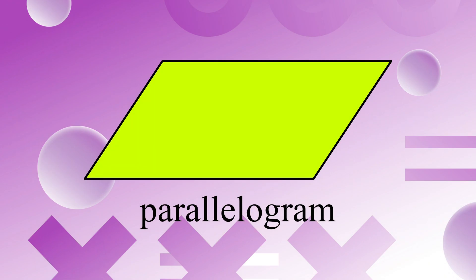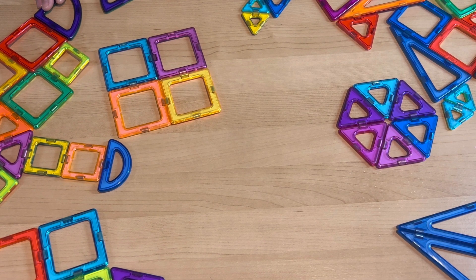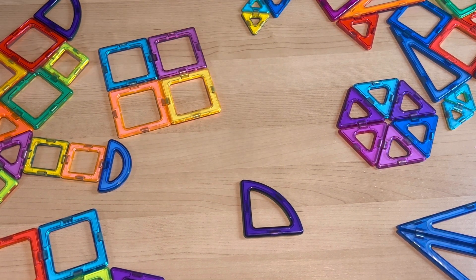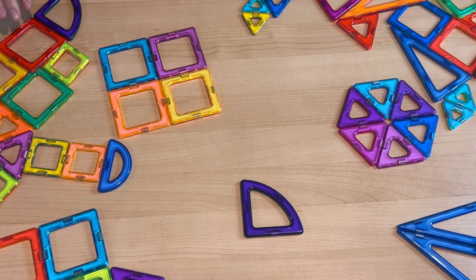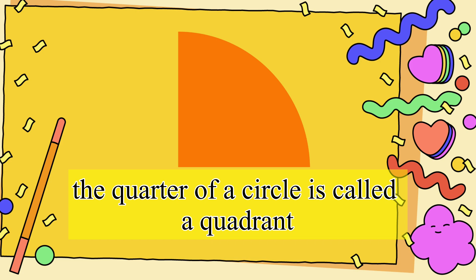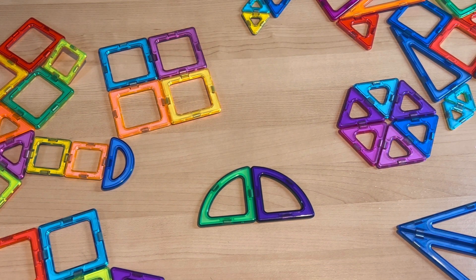What else do we have here? It's a pie, or a quarter of a circle. If we add one more, it becomes a semicircle.